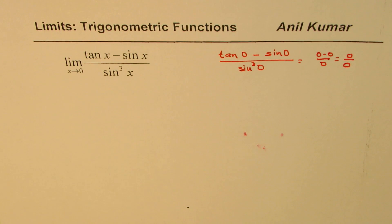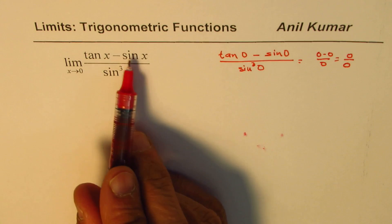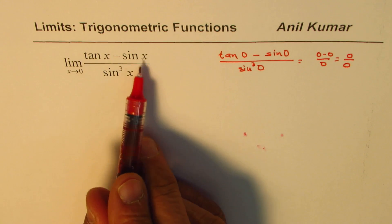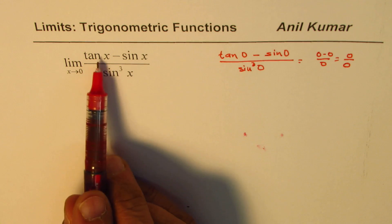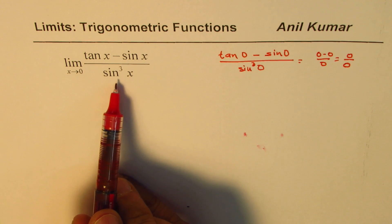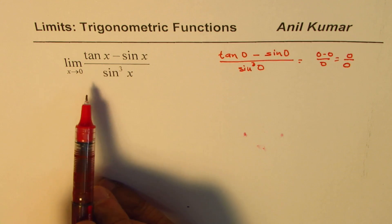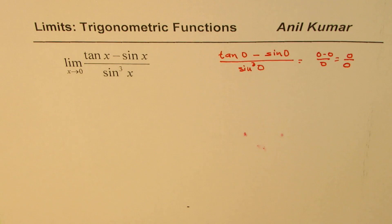And therefore, we need to somehow simplify the given expression to cancel out the common terms in the numerator and denominator, and then find the limit. So that's the strategy.